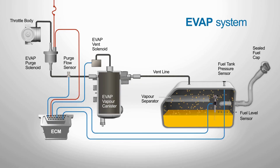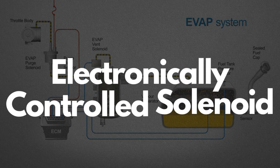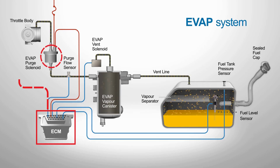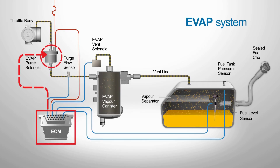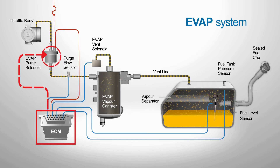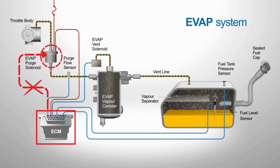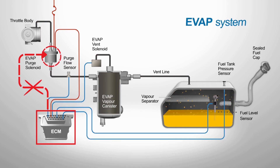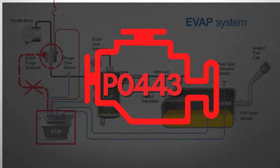Now let's talk about why the P0443 code gets triggered. The purge valve is an electrically controlled solenoid, and it's the PCM's job to tell it exactly when to open and close so those trapped fuel vapors can be sent into the engine at the right time. If something goes wrong, the PCM loses control over the purge valve — and that's when it throws the P0443 trouble code.